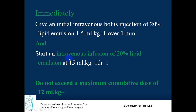Then start a continuous intravenous infusion of 20% lipid emulsion — such as Lipofundin or another commercial product — at a rate of 15 milliliters per kilogram per hour. Do not exceed a maximum cumulative dose of 20 milliliters per kilogram, which for a 70 kg patient is approximately 1400 milliliters.